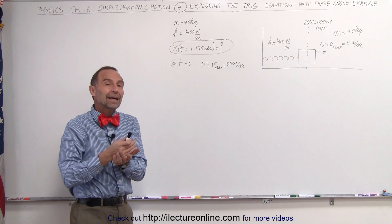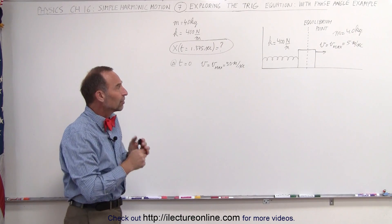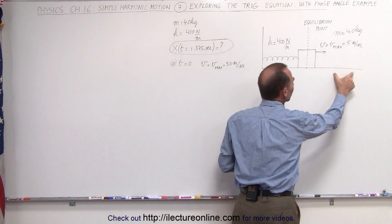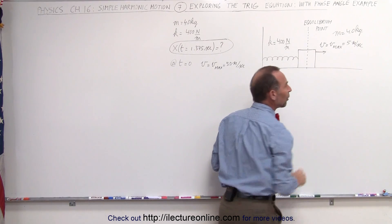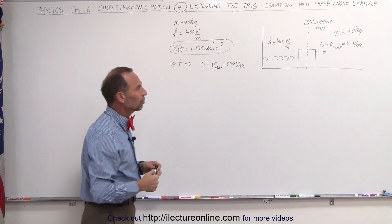It cannot be y equals a times the cosine of omega t, because that would place the block at its farthest point away from the equilibrium point, where x equals a, the maximum amplitude.